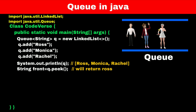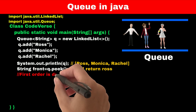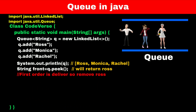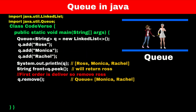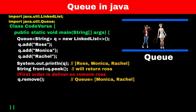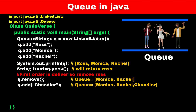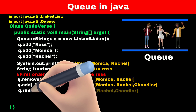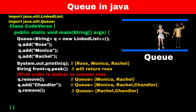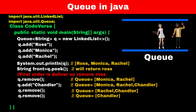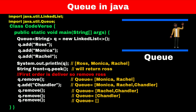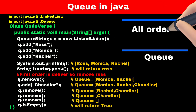Now suppose the first order for pizza is ready. We will deliver it to Ross and remove him from the queue using the remove function. Now Monica is at the front of the queue. If Chandler places an order, we add him to the queue. When the second pizza is ready, we deliver it to Monica and remove her. When the third pizza is ready, we deliver it to Rachel and remove her. When the fourth pizza is ready, we deliver it to Chandler and remove him. Now the queue is empty, which means we have delivered all the orders.